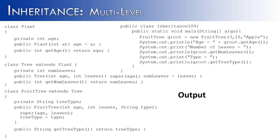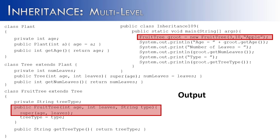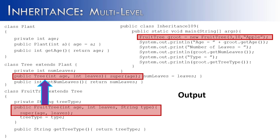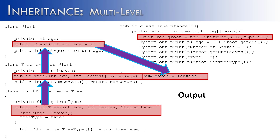Now let's see how it works in code. I've created a runner called Inheritance109 with code that walks through how fruit tree utilizes the tree and plant class. We create an object of the fruit tree called Groot, with age 3, leaves 10, and tree type apple. Going inside the subclass FruitTree, inheritance is happening, so it must meet the needs of its superclass first — going up to tree. Tree also has inheritance happening, so it goes up to plant. The first thing initialized is age, then it comes back down to initialize leaves, and finally initializes the tree type.